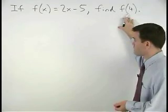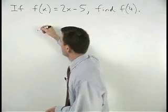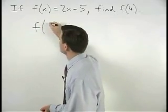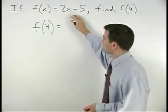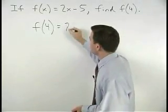Well, if we put a 4 into the function, that's f of 4, we get a 2 times 4 minus 5 out.